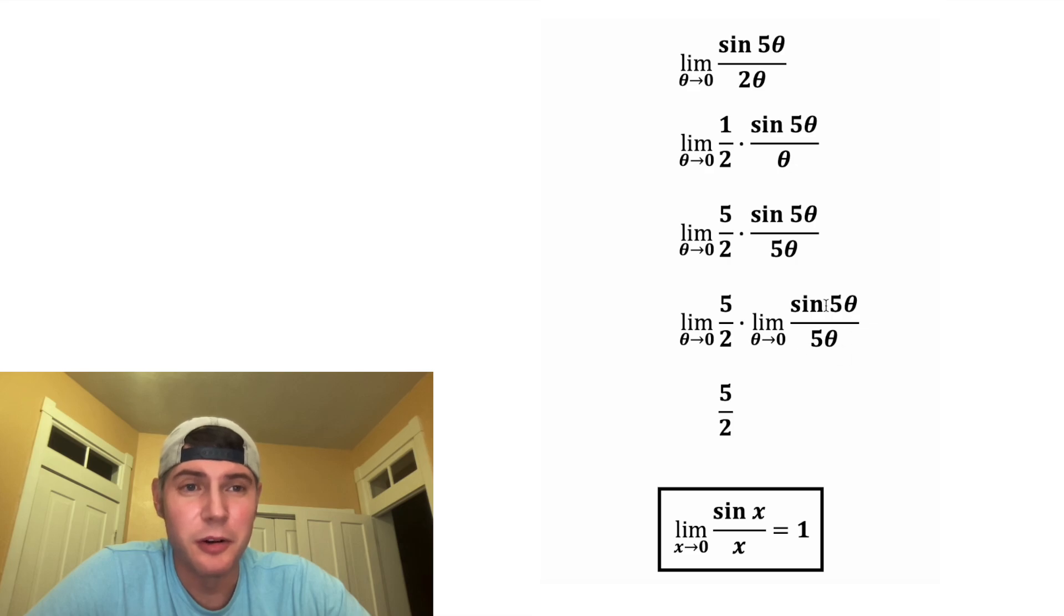And then the limit as theta approaches 0 of this, well, we can use these notes now. Since these two things match and they're approaching 0, it's going to be equal to 1. And then 5 halves times 1 is equal to 5 halves.